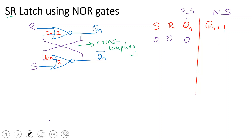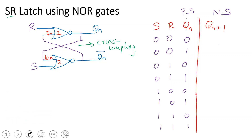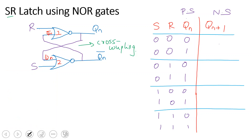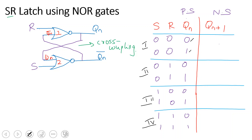The inputs are: 0 0, 0 1, 1 0, 1 1 for S and R. We can split the truth table into 4 cases. Case 1: S=0, R=0, with QN being 0 or 1. Case 2: S=0, R=1, with QN being 0 or 1. Case 3: S=1, R=0, with QN varying between 0 and 1. Case 4: S=1, R=1.